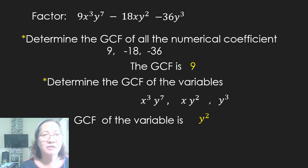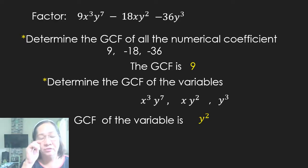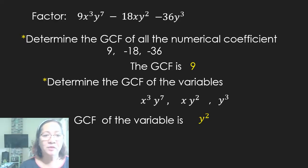Let's have one more example. Factor 9x³y⁷ minus 18xy² minus 36y³. First, we have to determine the GCMF of all the numerical coefficients: 9, negative 18, and negative 36. The greatest common factor is 9.